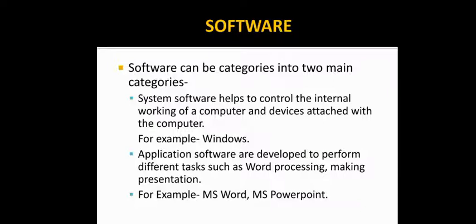Second one is your application software. That are used to perform a particular type of task. And one application software can perform only one type of task. For performing another type of task, you should have another application software. Like your word processing, making presentations, all these. If you want to make presentation, then you have to use MS PowerPoint. If you want to make some documentation, then you have to use word processing.